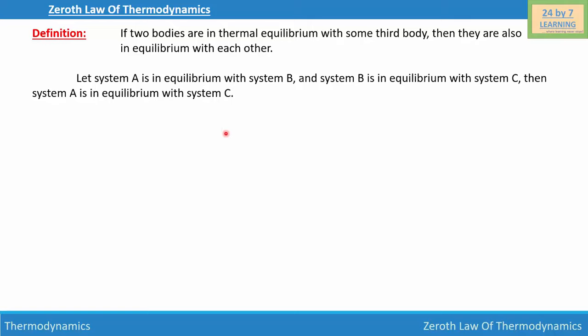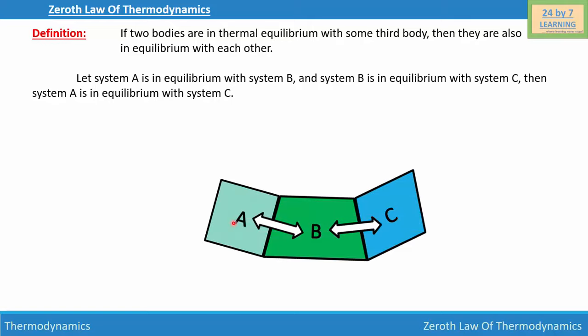Now, I have three bodies: A, B, and C. As you can see, body A and body B are in thermal equilibrium, and body B and body C are also in thermal equilibrium. Then according to the Zeroth Law of Thermodynamics, body A and body C will also be in thermal equilibrium.